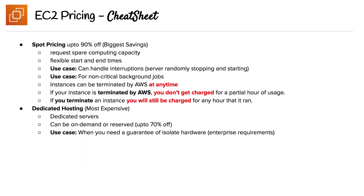Now onto spot pricing, which is up to 90% off — it's going to give you the biggest savings. What you're doing is requesting spare computing capacity, like hotel rooms where they're just trying to fill vacant suites. If you're comfortable with flexible start and end times, spot pricing is good for you. The use case is when you can handle interruption — servers randomly stopping and starting — making it a great fit for non-critical background jobs. Instances can be terminated by AWS at any time. If AWS terminates your instance, you won't be charged for that partial hour of usage, but if you terminate it yourself, you will be charged for any hour it ran.